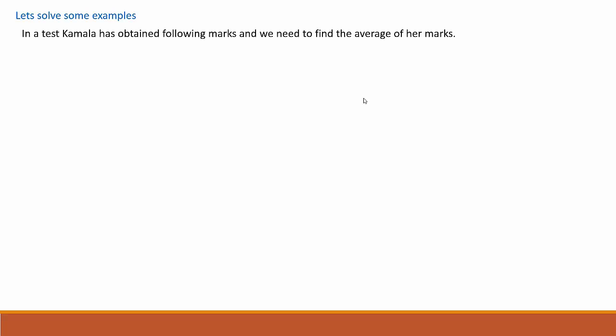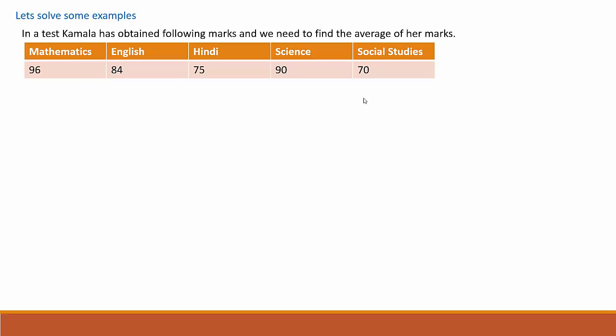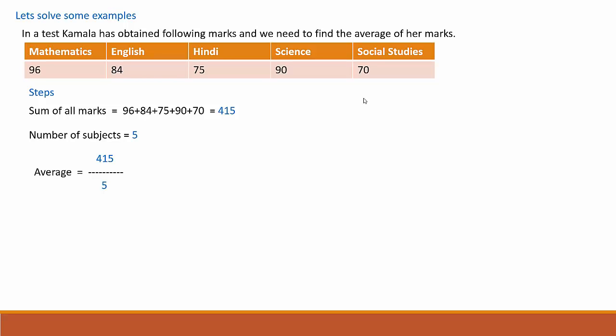Now let's solve some examples. In a test, Kamala has obtained the following marks and we need to find the average of her marks. Average is equal to the sum of all observations — here the observations are the marks. The sum of all marks is 415. The number of observations is the number of subjects, which is 5. So average equals 415 divided by 5, which equals 83. The average marks obtained by Kamala is 83.